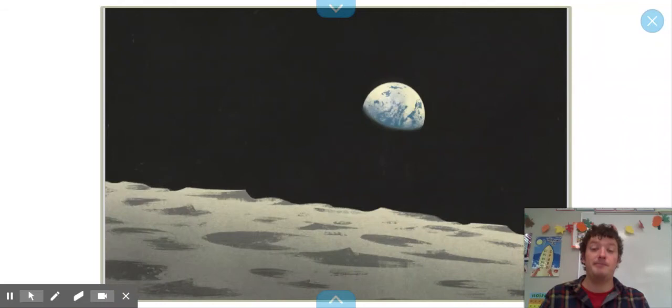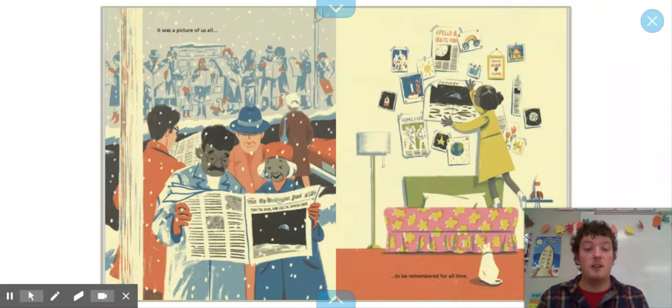Right there. So the gray is the moon, and the blue and white is our planet Earth. It was a picture of us all to be remembered for all time.